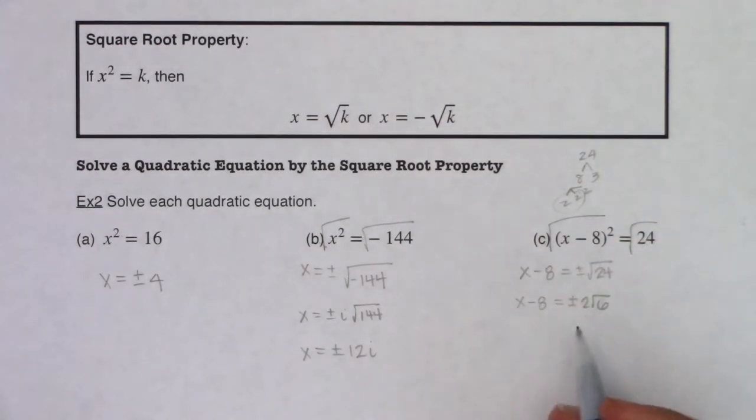Now I need to solve for x, so I'm going to add 8 to both sides. These are not like terms. You can't add a radical to a constant. That's not how radicals and constants work. So this will just be 8 plus or minus 2 root 6.